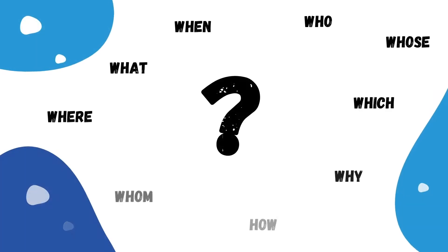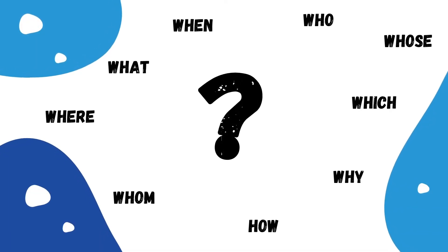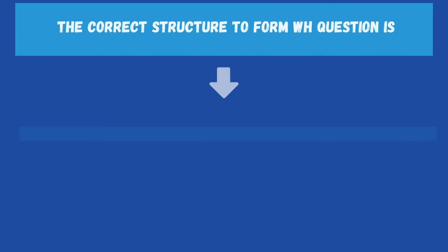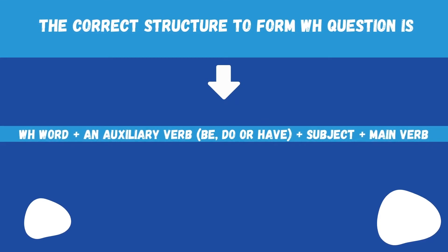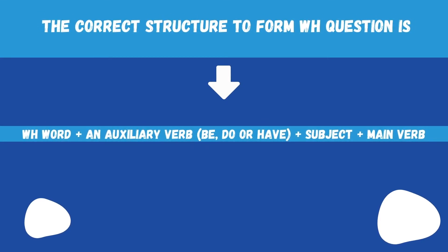Now it's time to move on to the grammatical part. In this part you are going to learn the correct use of WH questions. They are called WH questions because they start with a question word. You use a WH question when you want information about something or someone. The correct structure to form a WH question is: WH word plus an auxiliary verb — be, do, or have — plus the subject and the main verb.